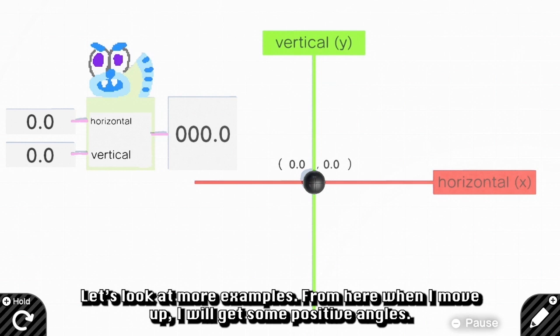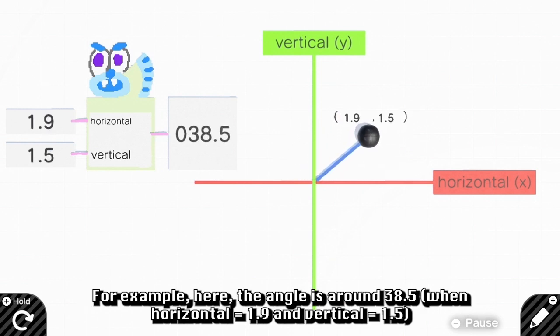From here, when I move up, I will get some positive anchors. For example here, the anchor is around 38.5.